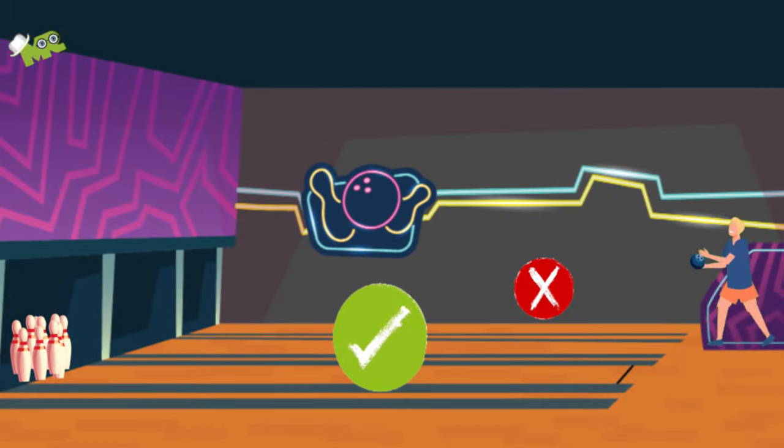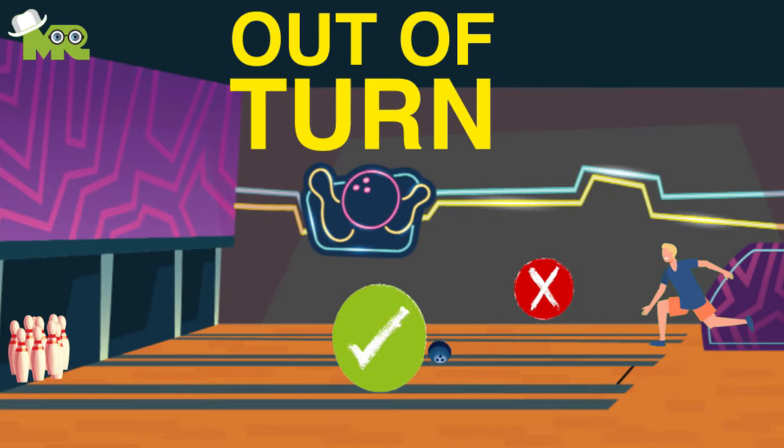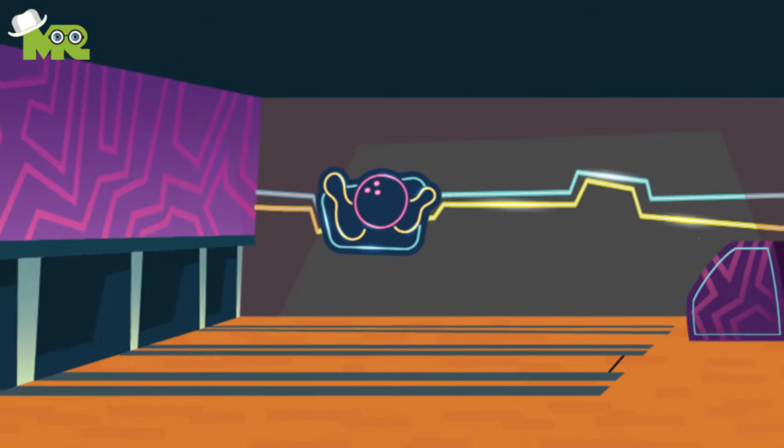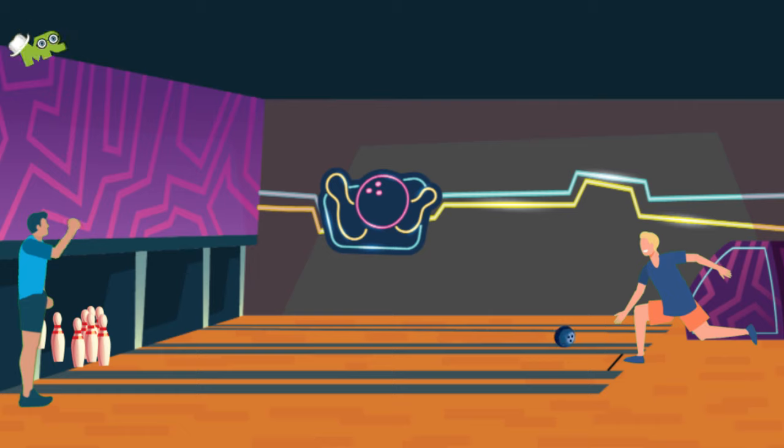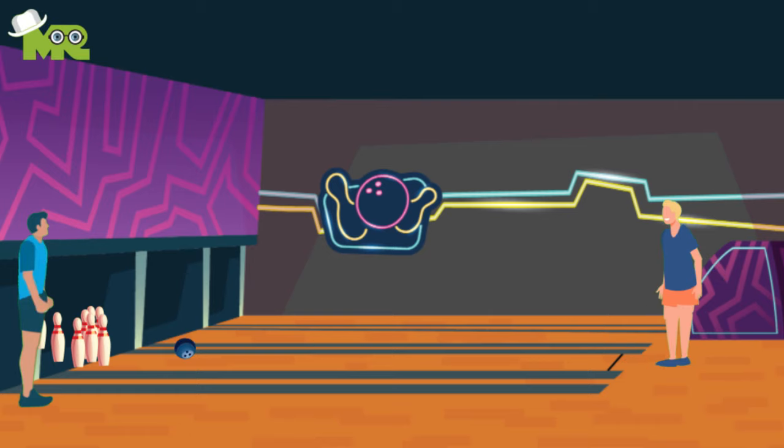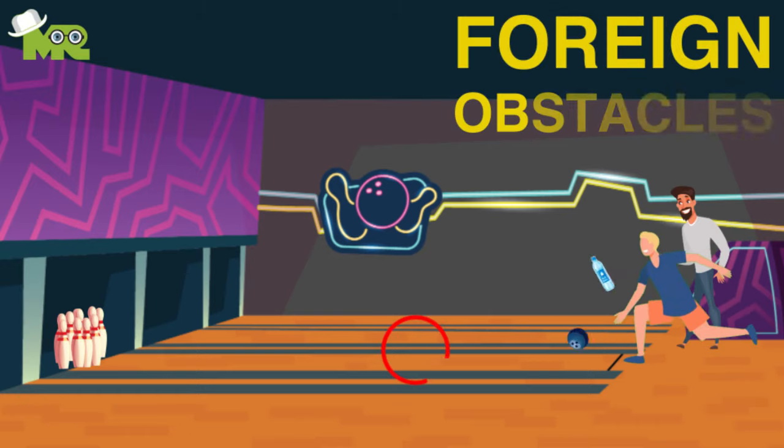If a player bowls on the wrong lane, out of turn. If a player is distracted by a pin setter, moving objects, or any other spectator before rolling or during the delivery. If the ball comes in contact with any foreign obstacle.